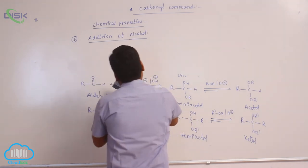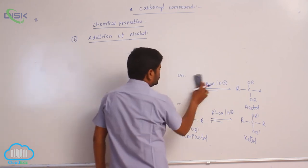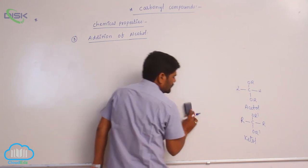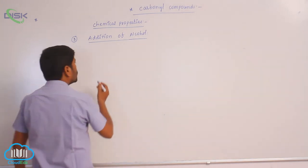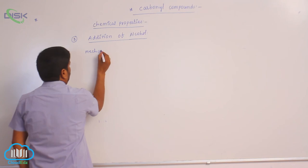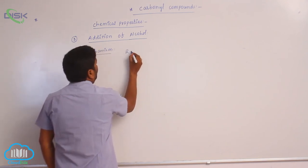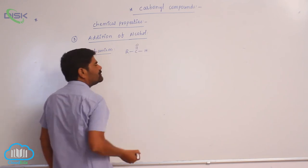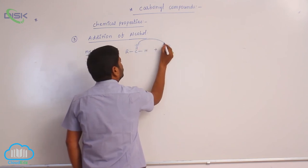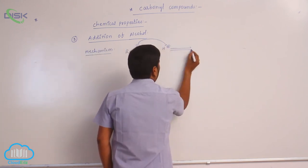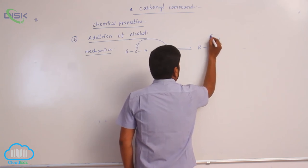Now let us discuss the mechanism of the formation of hemiacetal as well as acetal. For an aldehyde — C double bond O — in acid-catalyzed conditions, first it reacts with H plus. The oxygen contains a lone pair of electrons and accepts the proton. This gives a carbocation with a positive charge, placing positive charge on the carbon.